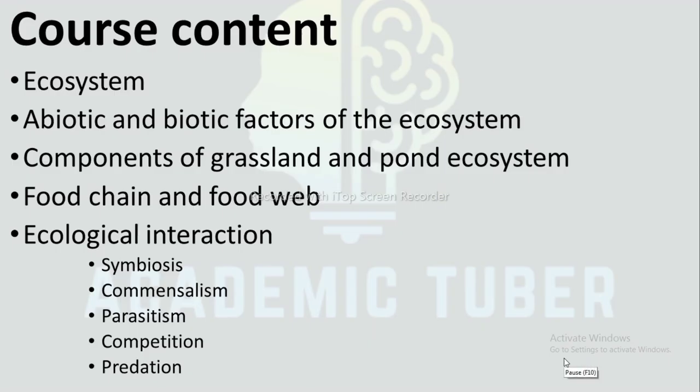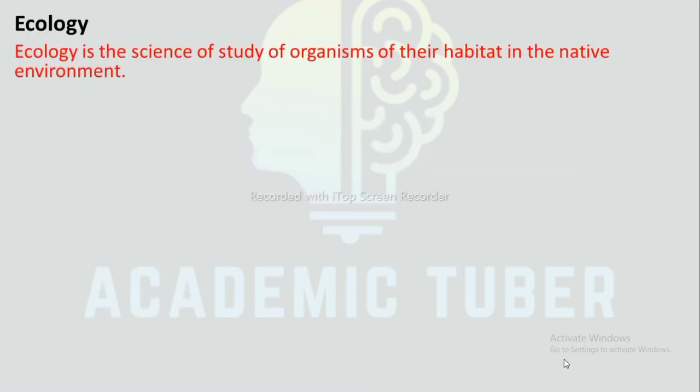In this unit we are going to discuss about ecosystem, abiotic and biotic factors of ecosystem, components of grassland and pond ecosystem, food chain and food web, and ecological interaction in our ecosystem. Ecology is the science of the history of organisms in their habitat in the native environment.